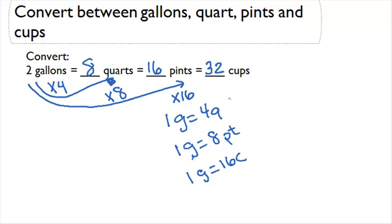So two gallons is equal to eight quarts, which is equal to 16 pints, which is equal to 32 cups.